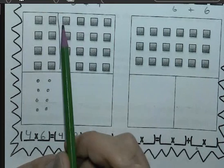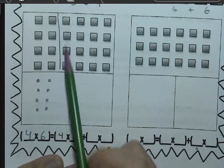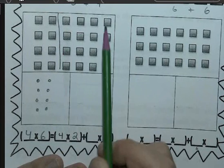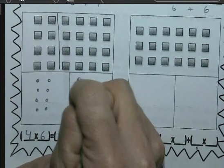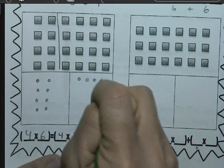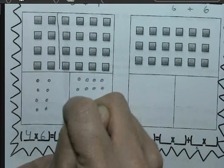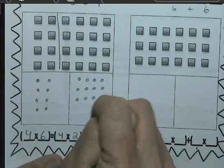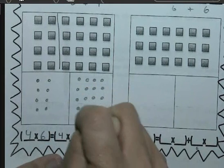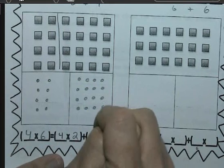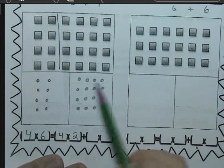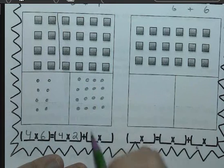Now the second array I broke it into is 4 by 4. So let me draw that. 1 set of 4, a 2nd set of 4, a 3rd set of 4, and a 4th set of 4. So the multiplication problem that is shown by this array is 4 times 4. So I put that in my second set.